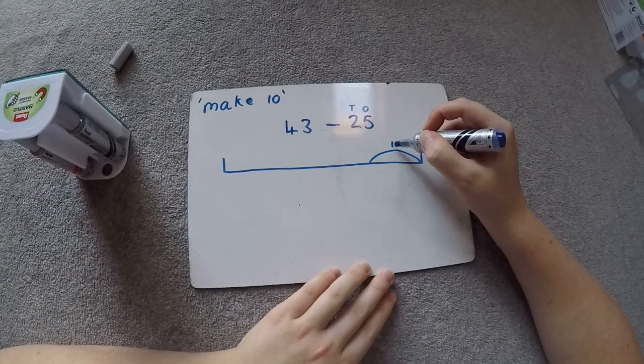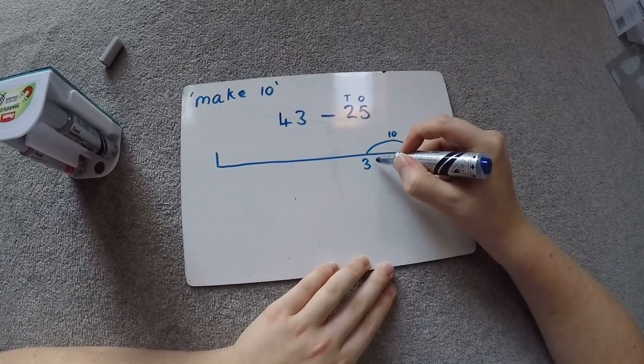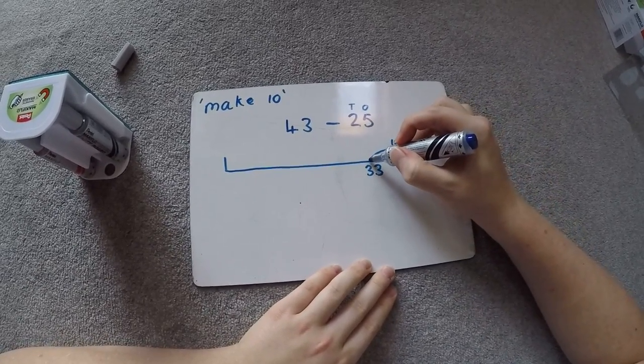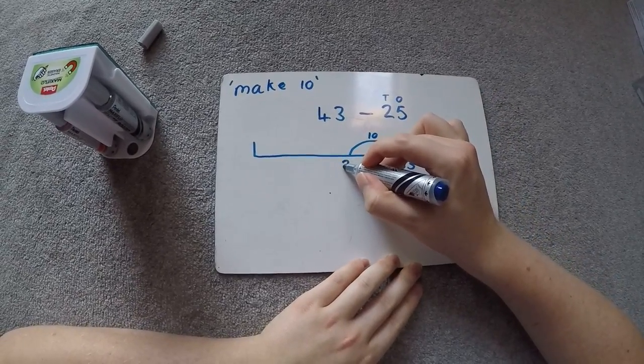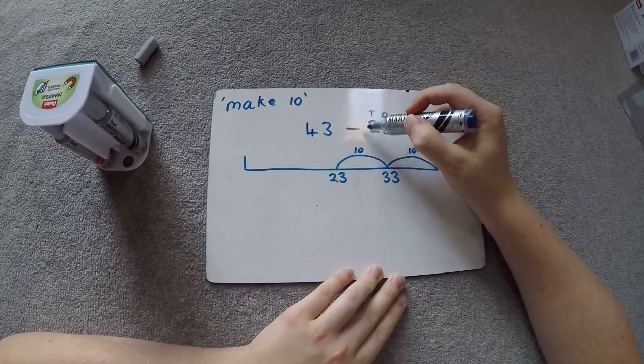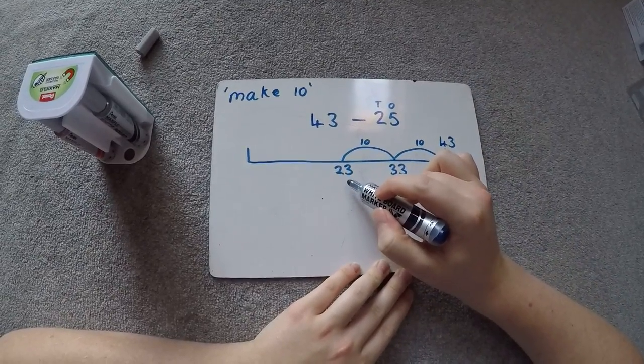43 take away that jump of 10 is going to be 33. Take away that jump of 10, it's going to be 23. So we know, having done our tens, we're now down at 23.